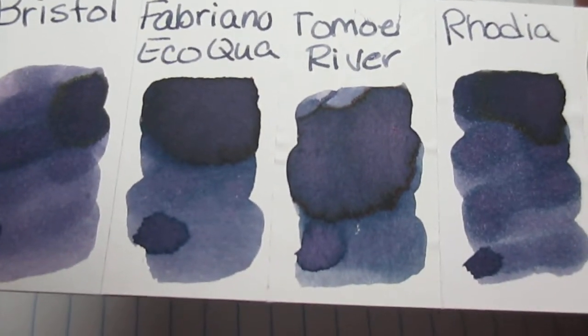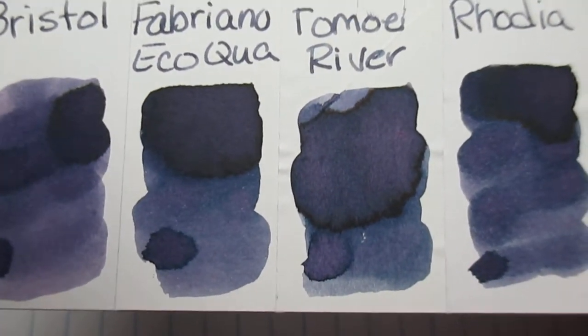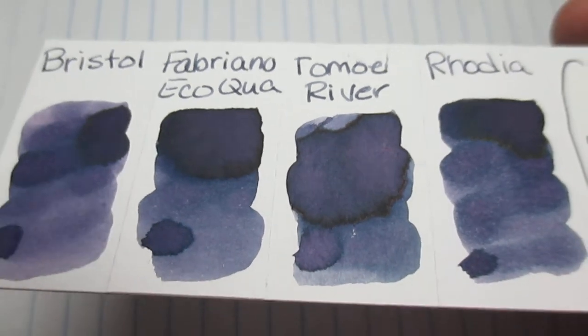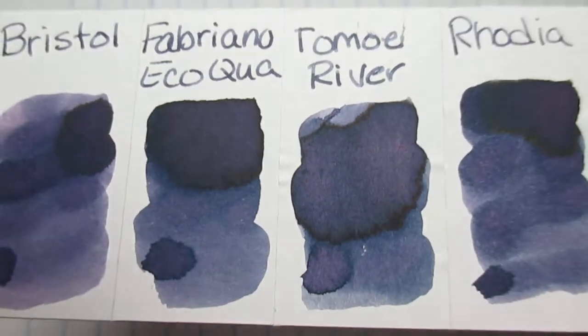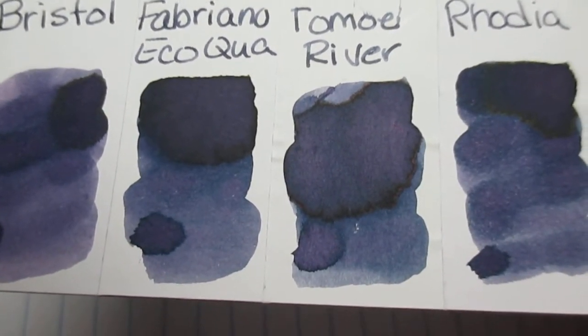Here it is up close. I don't see any sheen in it, but you can tell where it dried really heavily, it left a really dark ring on it. It's a pretty purple, it has more of like a bluish gray type of tone to it.